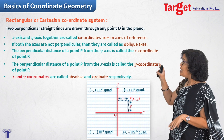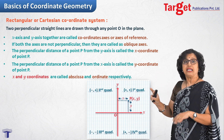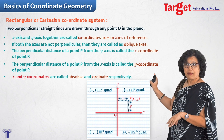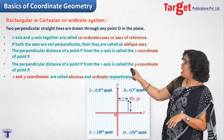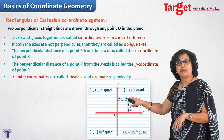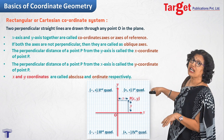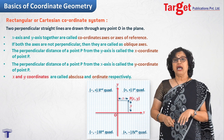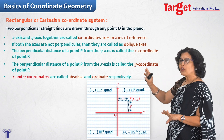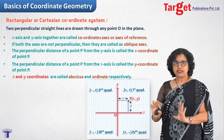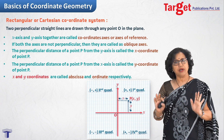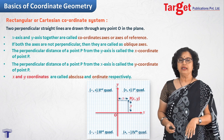You'll notice that in one part of the plane I've written (plus, plus), in another (minus, plus), in another (minus, minus), and in another (plus, minus). These four sections are given names — we call them quadrants: first quadrant, second quadrant, third quadrant, and fourth quadrant.